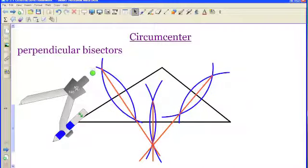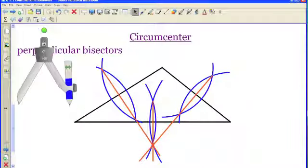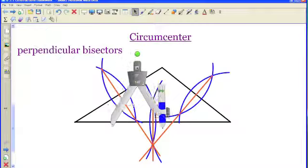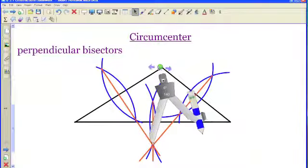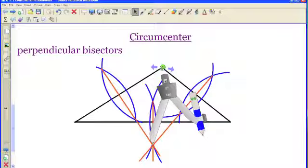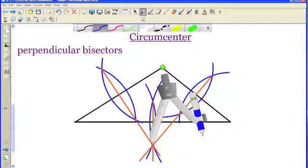And what a circumcenter does is it allows me to circumscribe a circle about the triangle. And what that means is that I can use that circumcenter as the center of a circle that goes around the triangle and make sure that the three vertices of the triangle are all on that circle.